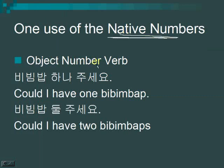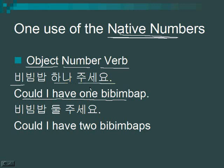One use of the native numbers is asking for things. The structure is: object, number, verb. So if you want one bibimbap, you say 비빔밥 하나 주세요. 주세요 is a polite form of 주다, meaning 'please give me.' For two, say 비빔밥 둘 주세요. For three, 비빔밥 셋 주세요. For four, 비빔밥 넷 주세요. So: object, number, verb.